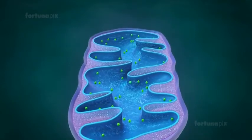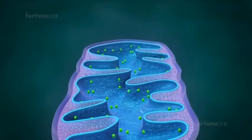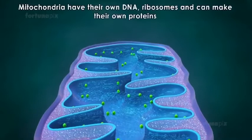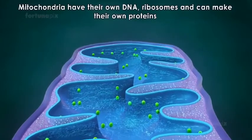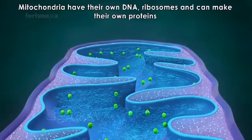Mitochondria are semi-autonomous. They are partially dependent on the cell to replicate and grow. They have their own DNA, ribosomes, and can make their own proteins.